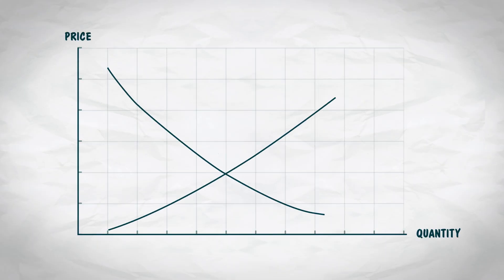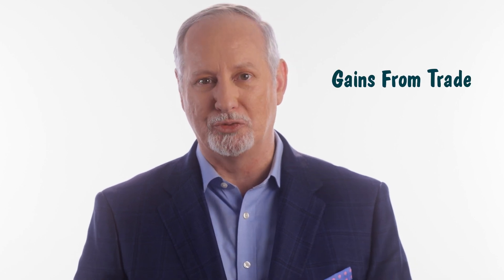Welcome back. Every supply and demand graph features a humble little dot in the middle. Let's call it equilibrium. In this video, we're going to explore equilibrium and how a free market maximizes the gains from trade.